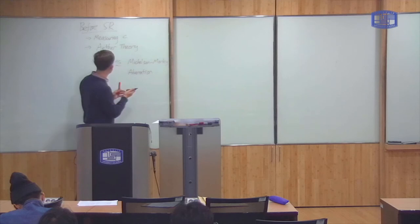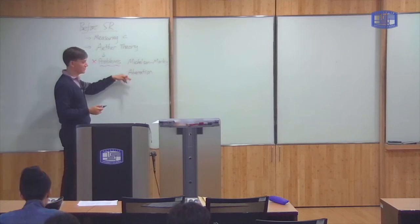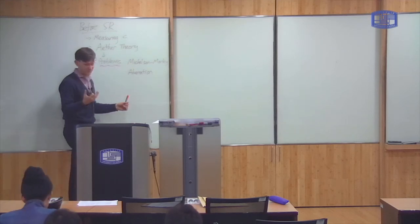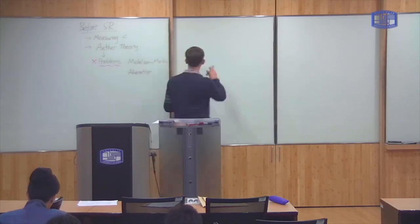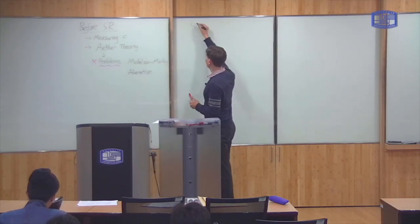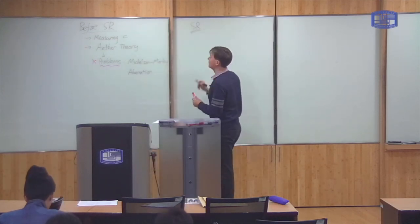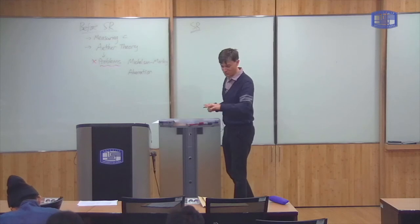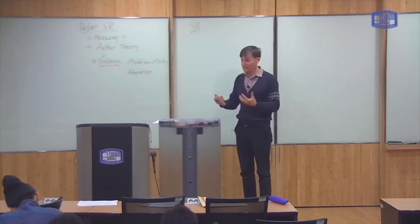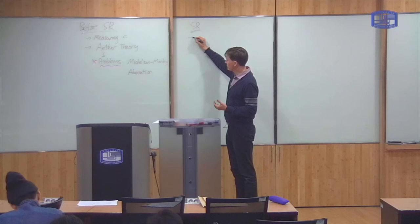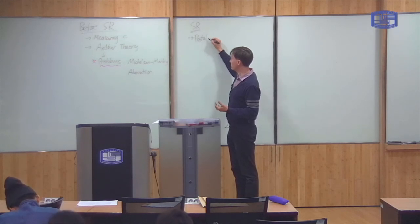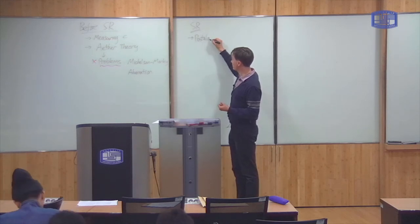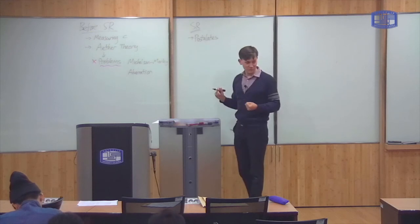And it's very difficult to make an ether theory which is consistent with all of these different experimental observations. Then, we came to the special theory of relativity, which was based upon two ideas, which we call the postulates of the theory.